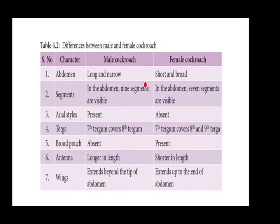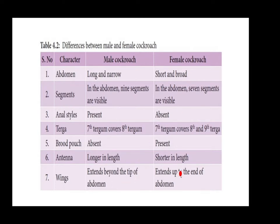Differences between male and female: The male abdomen is long and narrow; the female abdomen is short and broad. In the male abdomen, nine segments are visible; in the female, seven segments are visible. Anal style is present in males, absent in females. In the male, the seventh tergum covers the eighth tergum; in the female, the seventh tergum covers the eighth and ninth terga.